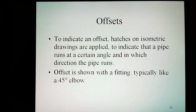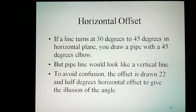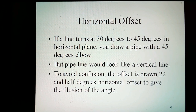Offset: to indicate an offset, hatches on isometric drawings are applied to indicate that a pipe runs at a certain angle and in which direction the pipe runs. Offset is shown with a fitting, typically a 45-degree elbow. A horizontal offset is where a line turns at 30 to 45 degrees in the horizontal plane. You draw the pipe with a 45-degree elbow, but the pipeline will look like a vertical line. To avoid confusion, the offset is drawn at 22.5 degrees horizontal offset to give the illusion of the angle.